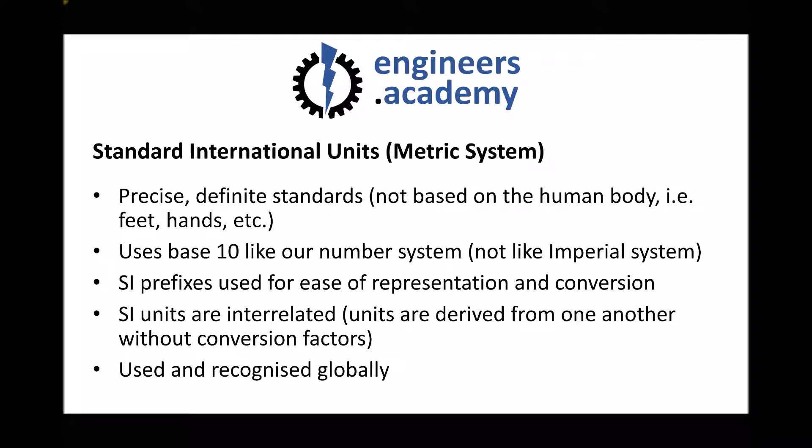Another advantage of the metric or SI system is that it uses a base of 10, like our number system. If we go from the number 2 to 3 in one decimal place, we go 2.1, 2.2, 2.3 all the way up to 2.9 and then 3.0 — there are 10 equal-sized increments. Comparing that to the old imperial system, many measures didn't use a base of 10: there are 12 inches in a foot and 14 ounces in a pound. So the SI system is simplified in that regard.